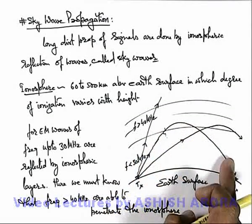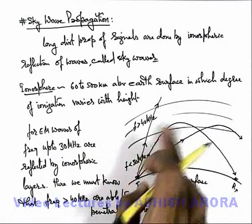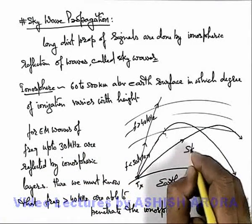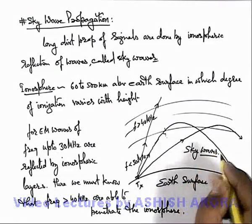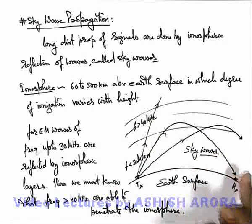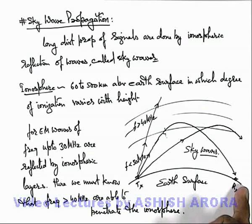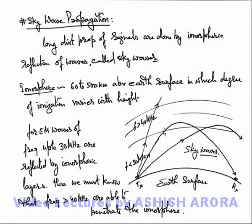This is how electromagnetic waves up to 30 MHz can be used for sky wave propagation. These waves which are reflected from ionospheric layers and received by a receiver located at a distant location are called sky waves.